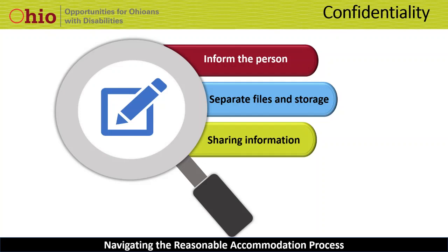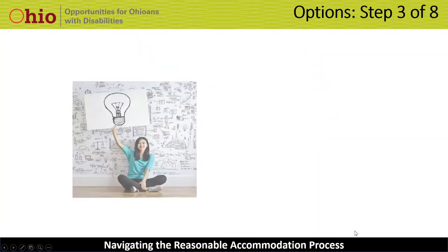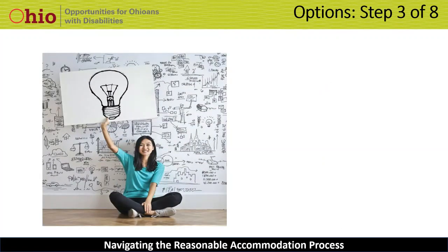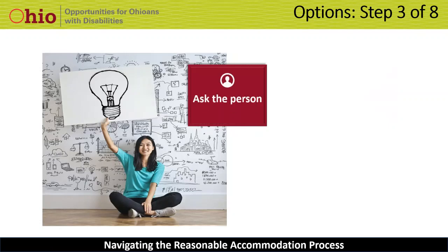Now we have the information needed to start exploring options — Step 3. Usually there is more than one way to accomplish a task, and we want to be open to new ideas and the possibility of doing things in other ways. That is one of the key messages I hope everyone leaves today's presentation with: the understanding that there is often more than one way to perform a task. A person with a disability often knows what accommodation will work best, so it's important to start by asking the person what ideas they have. You, as the employer, have expertise in your company's policies, systems, and practices, which is helpful in understanding how an accommodation can work within these parameters.